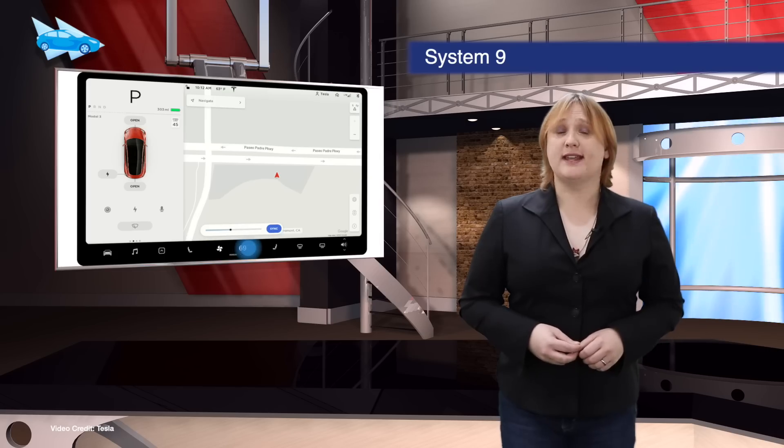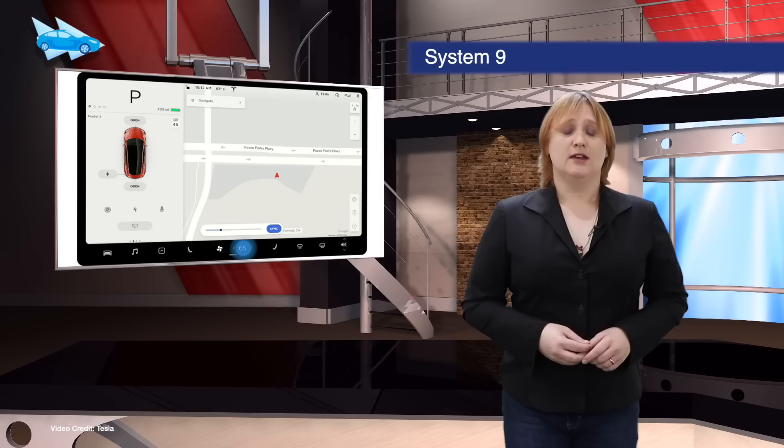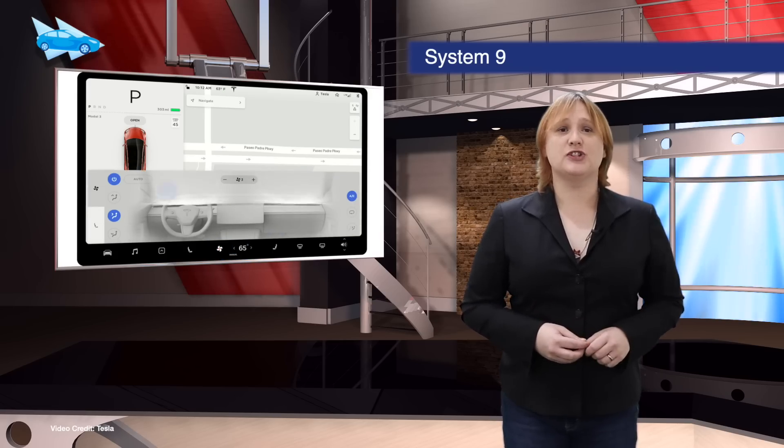Tesla has pushed its system nine update to all compatible cars this week, via over-the-air updates. Full autopilot is not engaged yet, but one neat new feature is the ability to use your car's camera as a video camera in the event of an accident.